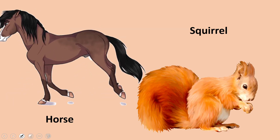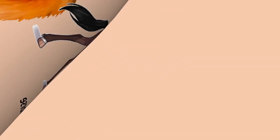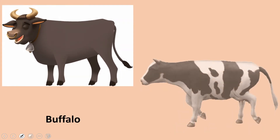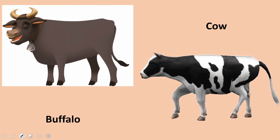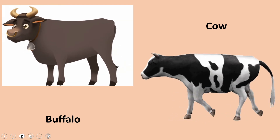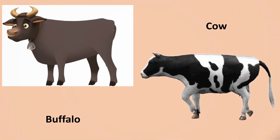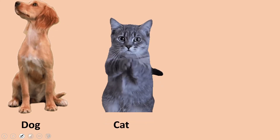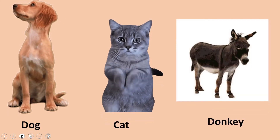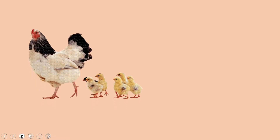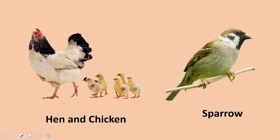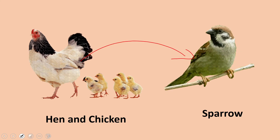The squirrel climbs up the trees very quickly. Then you can see a cow and a buffalo — they seem similar, but they are not similar. Then dogs, cats, and donkeys. We also see hen, chicken, and sparrows. Both the hen and sparrow have wings, but both are different from one another.